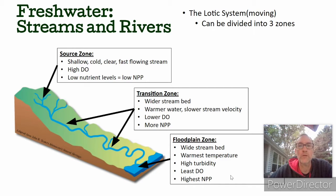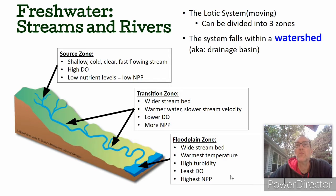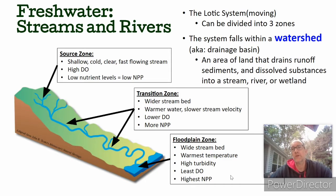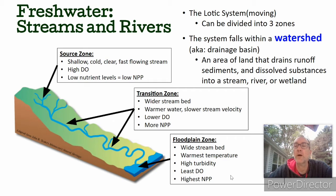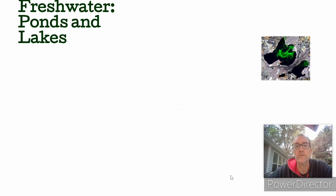It has the highest net primary production. We're talking about systems that fall within a watershed or drainage basin, which is an area of land that drains runoff, sediments, and dissolved substances into a stream, river, or wetland. This is really important here in Madison — our Yahara Lakes are heavily influenced by the watersheds they are in and the human activities in and around those watersheds. We'll be talking about inputs of nutrients and their impact on our lakes throughout the semester.